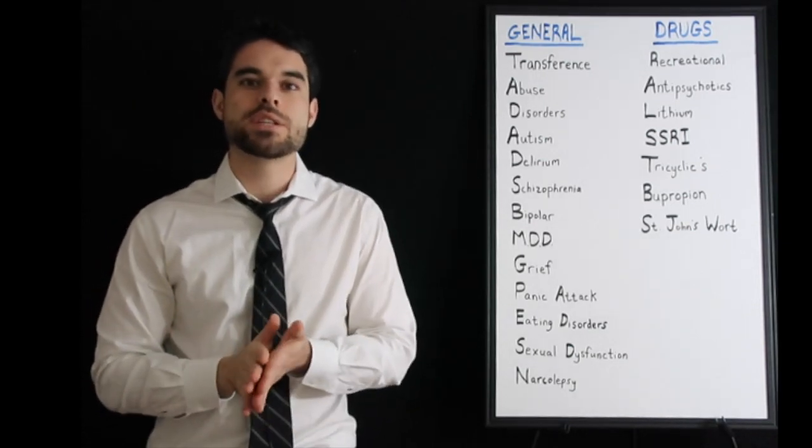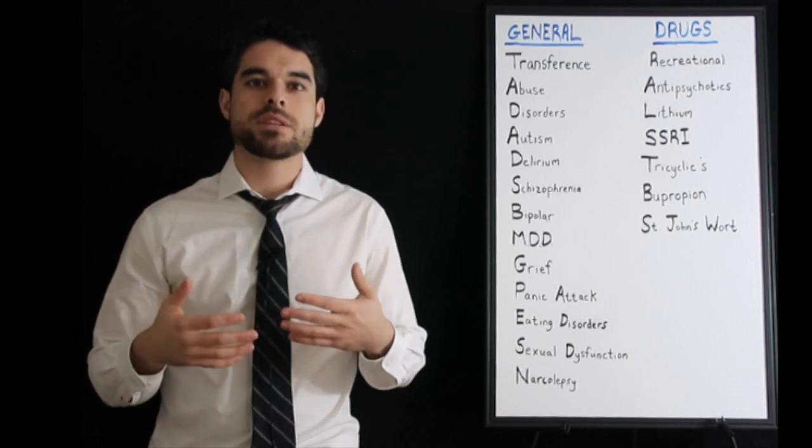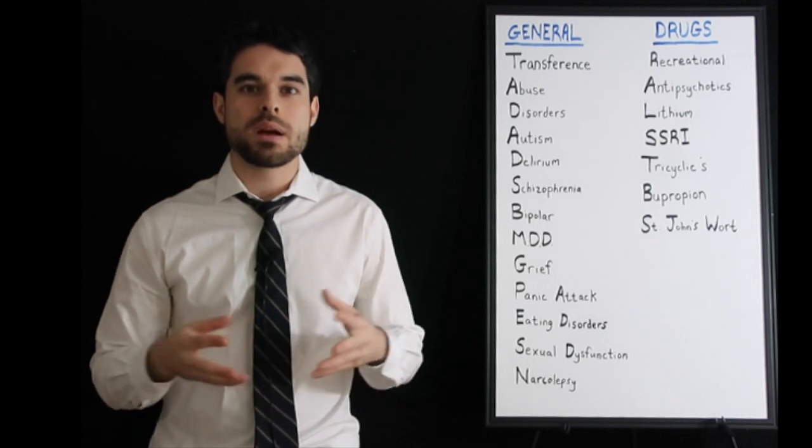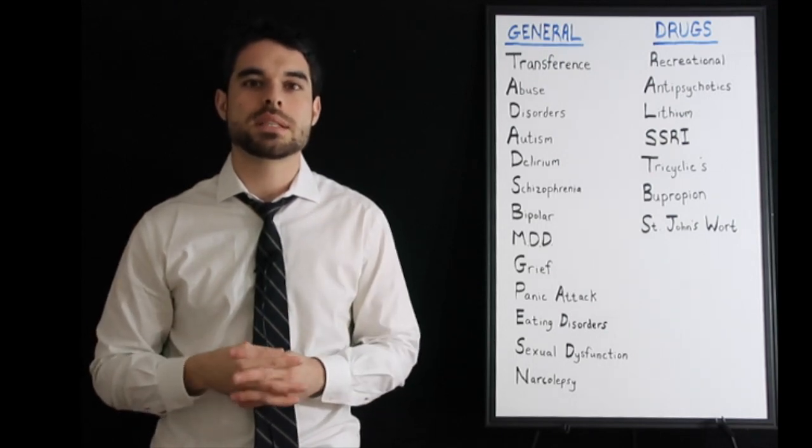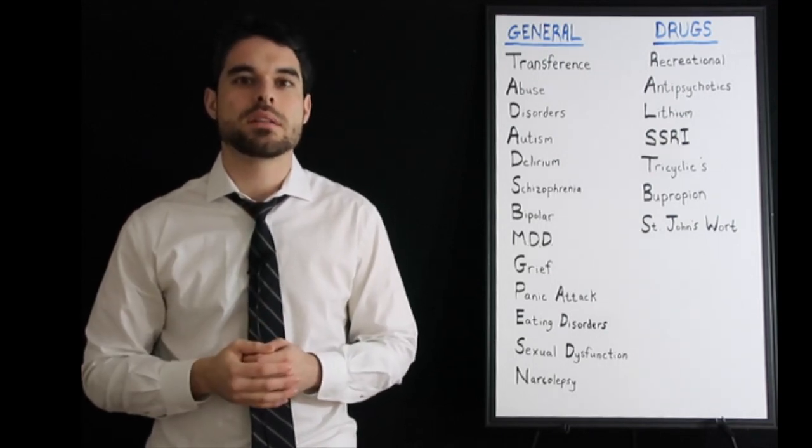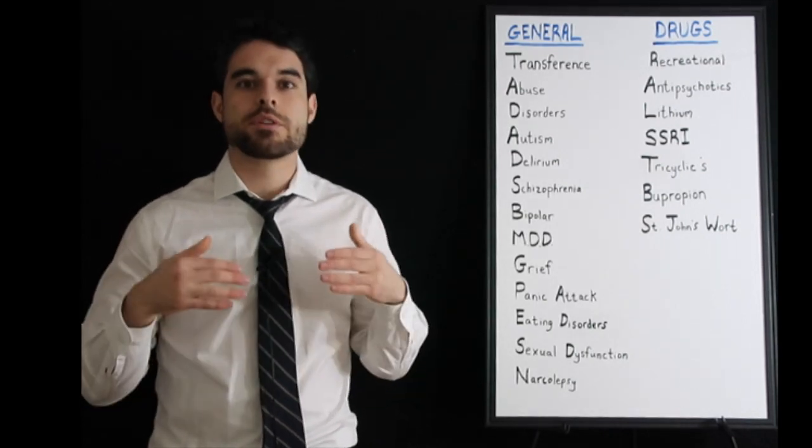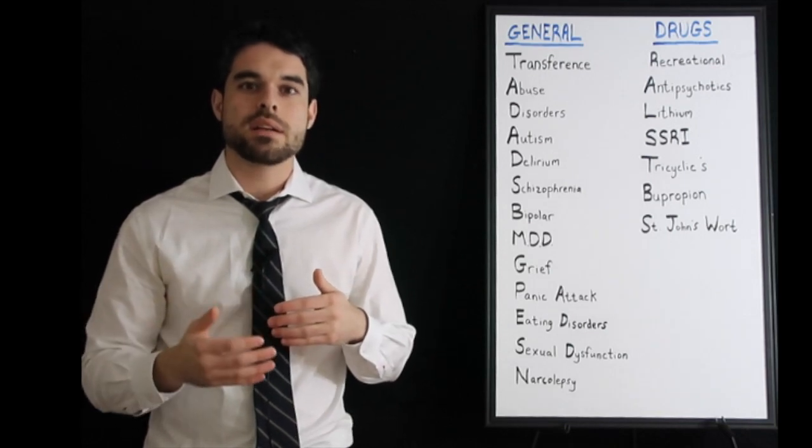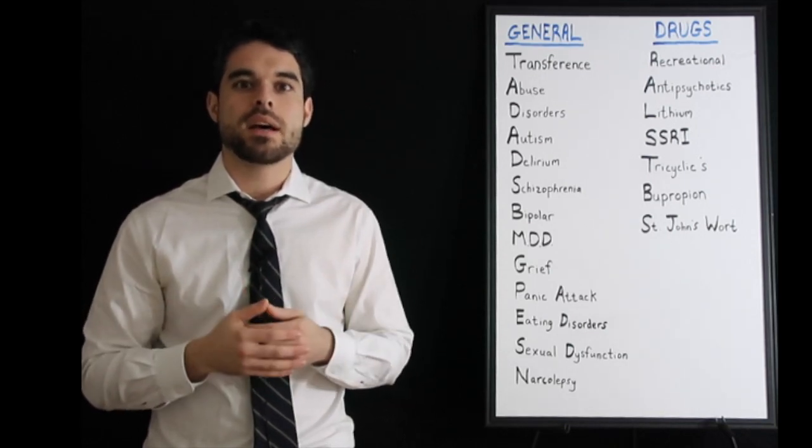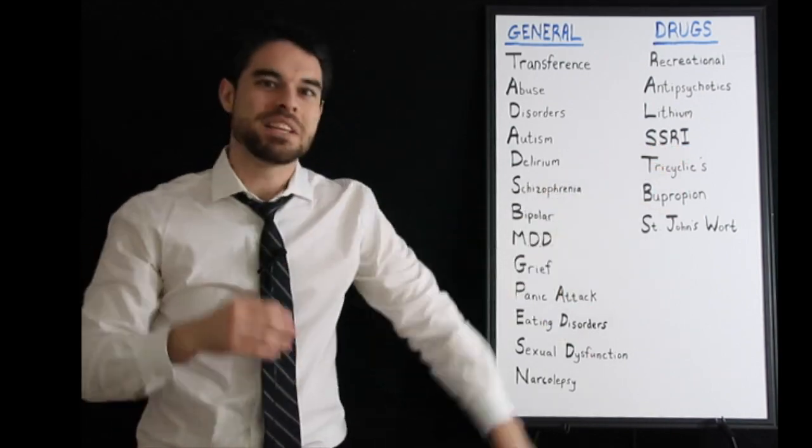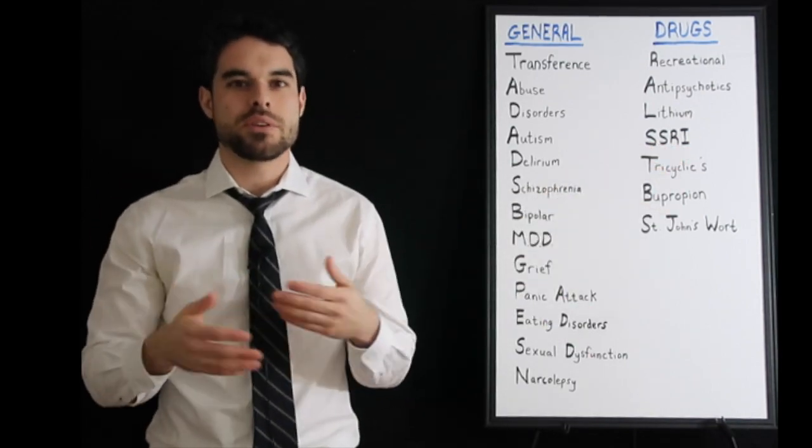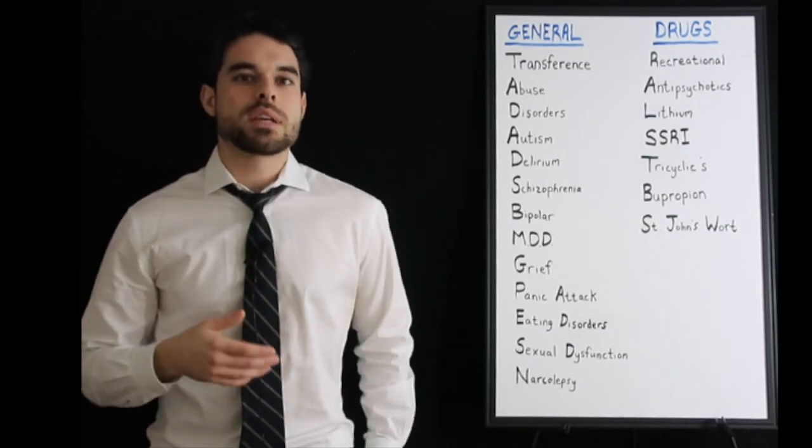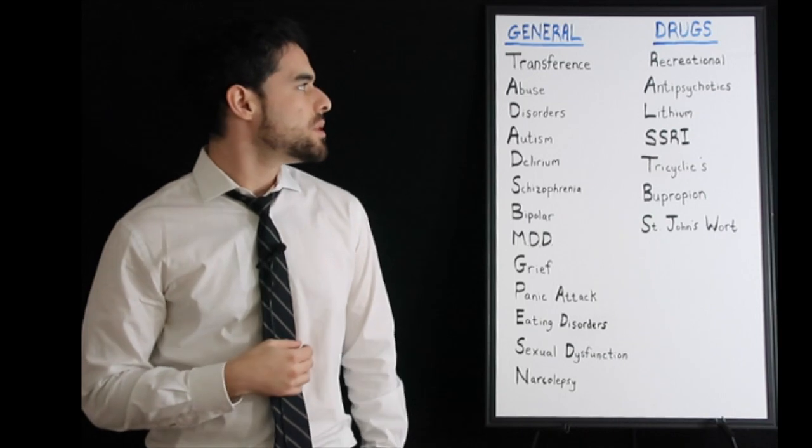Antipsychotics, the first generation: know that these can cause NMS, neuroleptic malignant syndrome, which is treated with dantrolene, the same medication for malignant hyperthermia. It blocks the calcium from coming out of the sarcoplasmic reticulum. The progression is going to be dystonia, then akathisia, then bradykinesia, and then you have the tardive dyskinesia. I remember if you dab dab dab, right: the dystonia, akathisia, bradykinesia, and then finally tardive dyskinesia, which anticholinergics like benztropine have shown some help.